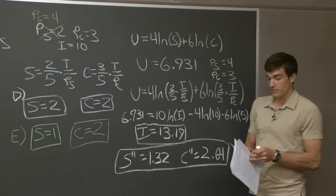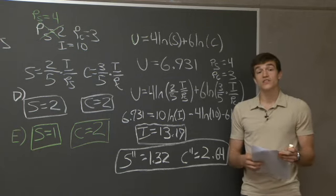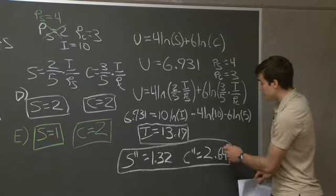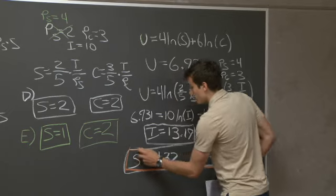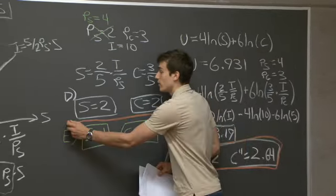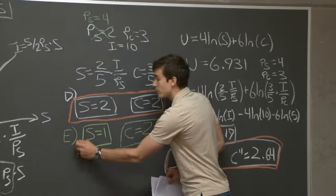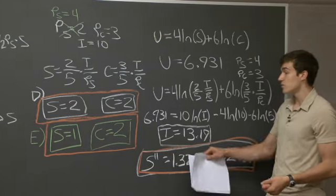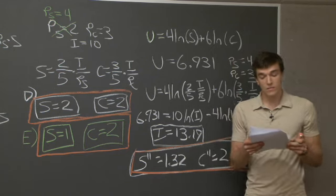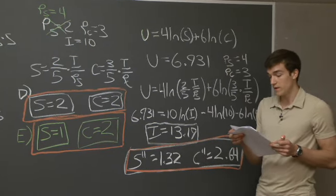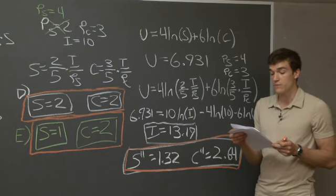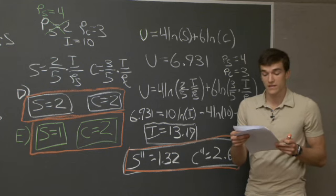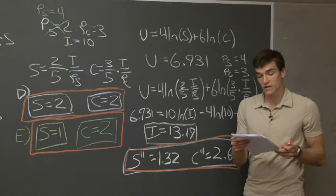Part G is the most important part of the problem because it ties together the three scenarios. We had the initial scenario before the price increase, the scenario after the price increase, and the scenario where we gave her income to remain at the same utility. We're going to look at these conceptually on a graph and relate the three bundles of consumption. Part G asks us to decompose the total change in software and clothes demanded into substitution and income effects.